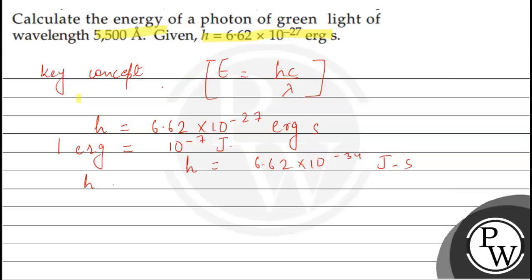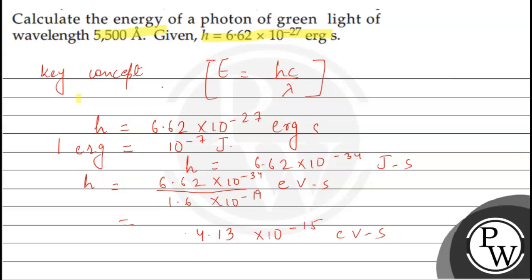Now dividing by 1.6 into 10 to the power minus 19 joule per electron volt, we can convert h into electron volt second. Since 1 electron volt equals 1.6 into 10 to the power minus 19 joule, h comes out to approximately 4.13 into 10 to the power minus 15 electron volt second.